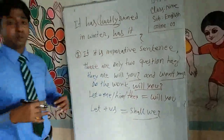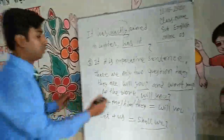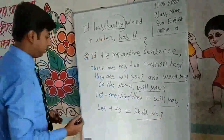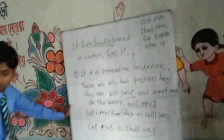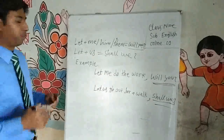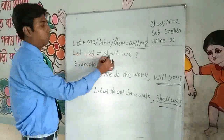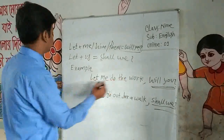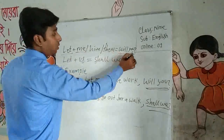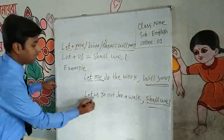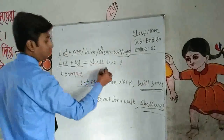For the structure of imperative sentences with 'let': when an imperative sentence begins with 'let' plus any personal object (not 'us'), we use 'will you'. For example: 'Let me do the work, will you?' But when the sentence uses 'let us', we use 'shall we'. For example: 'Let us go out for a walk, shall we?'